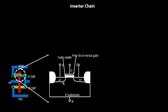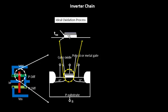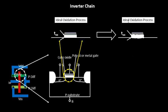In an ideal scenario, the gate oxide thickness will be constant throughout the channel — that is what is expected from an ideal oxidation process. However, for an ideal process to happen, everything in the fab must be ideal, and that is not exactly the case.